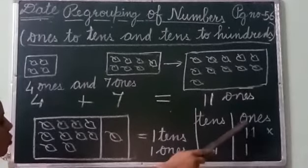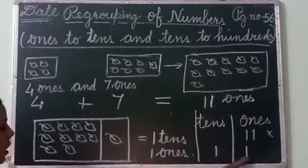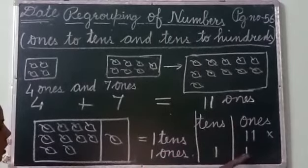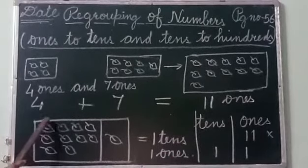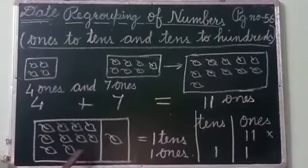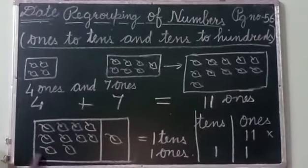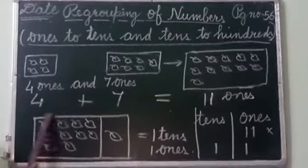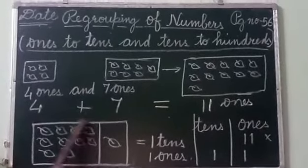So this one will move to the tens place. You got the number: 1 in the tens place and 1 in the ones place — because 10 plus 1 is 11. So 1 is in the tens space and 1 is in the ones space.